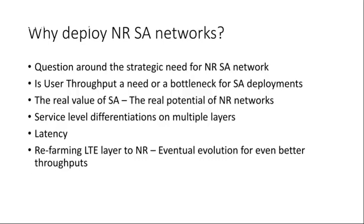These kinds of network differentiations cannot be achieved in NSA. Latency is also a very important aspect of standalone networks, as you get significantly lower latency compared to NSA. This is critical for ultra-reliable low-latency communication (URLLC) use cases such as automated cars, automated transport, and automated factories where latency is exceptionally important. Additionally, as LTE spectrum is refarmed to NR, more layers will be added on the NR side, leading to eventual full standalone evolution.